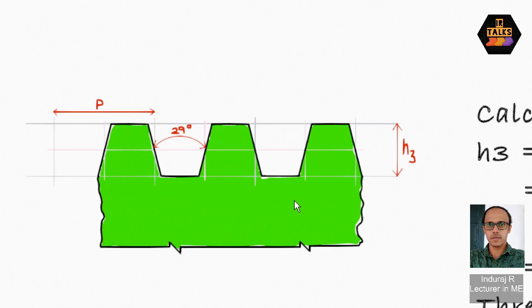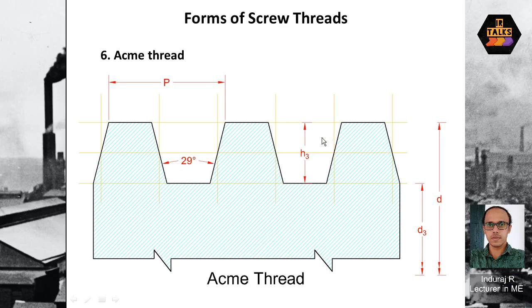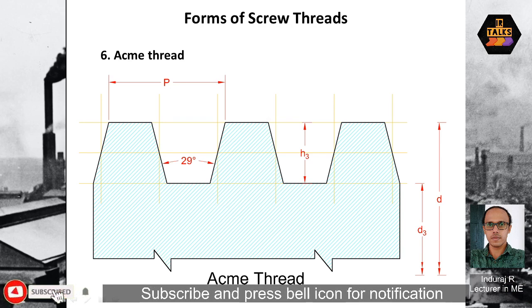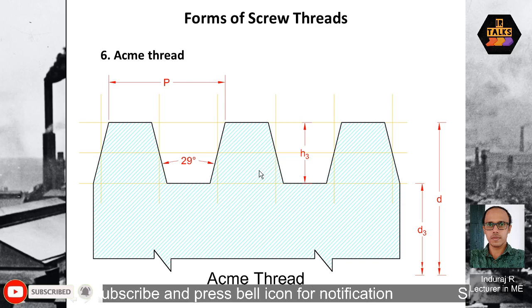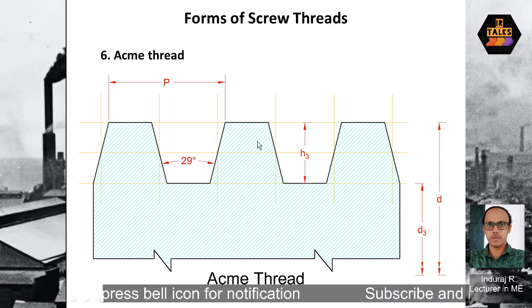We can do this drawing with AutoCAD as well. Here we will mark dimensions. We have to hatch the sections here and here. Then mark the 29-degree angle, then P for pitch.